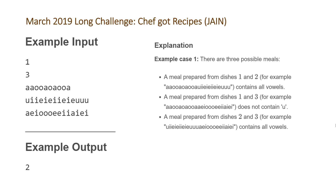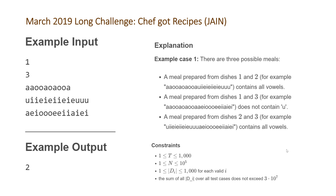The constraints of this problem are pretty hefty, so a brute force solution is going to fail. The number of dishes is up to 10 to the 5, so in the worst case comparing each dish with every other dish is a quadratic algorithm — 10 to the 5 squared — which would immediately put us over the roughly 10 to the 8th operations requirement in order to pass.